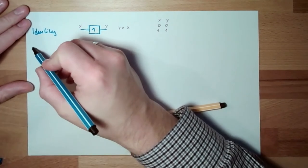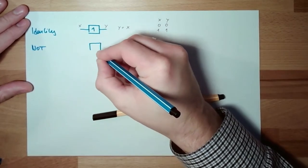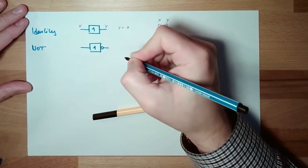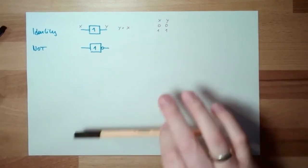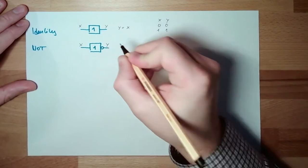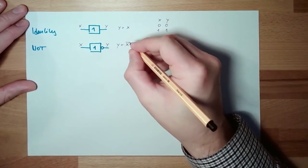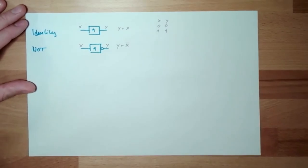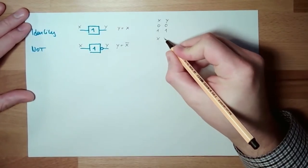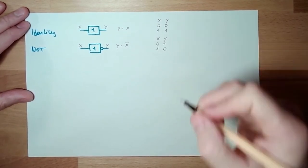Then we have a NOT. The NOT looks like the same symbol but now with a small circle. Such small circles usually invert things. Input X, output Y. The logical equation is Y equals NOT X. The table of truth: if X is zero, Y is one; if X is one, Y is zero. This is a NOT gate.